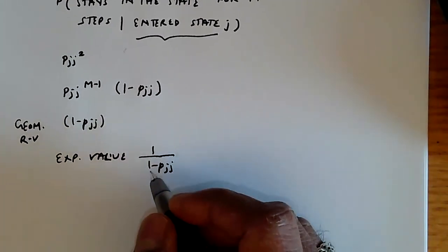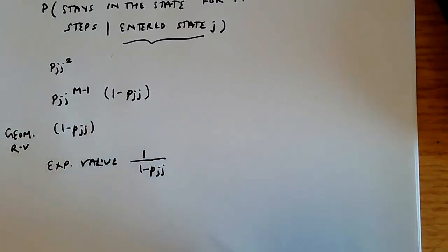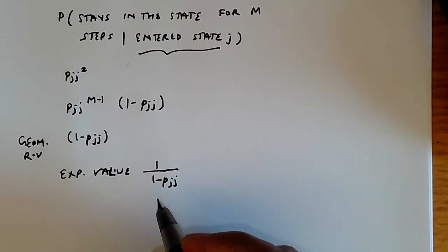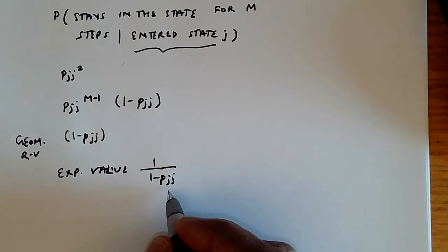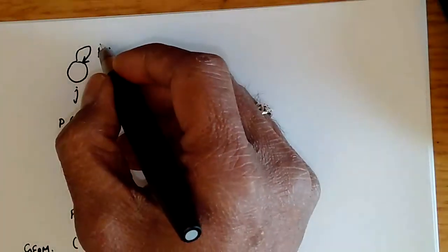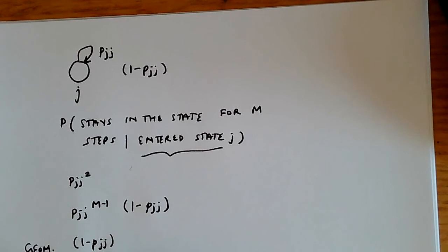And that is, of course, also the expected value of the residence time in state j. And so, this has a property that the larger the value of pjj is, the larger the value of the self loop, the smaller the value of 1 minus pjj, and the longer the expected mean residence time.